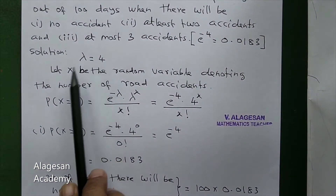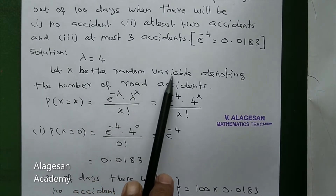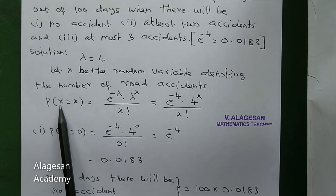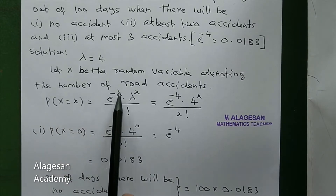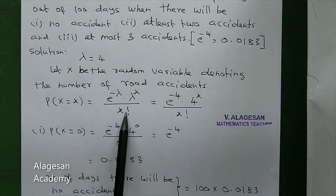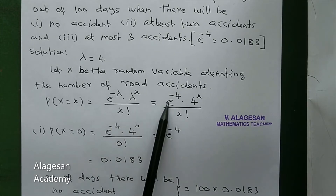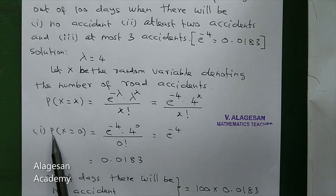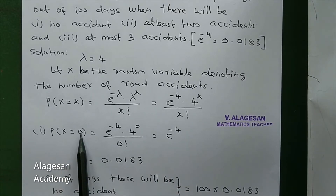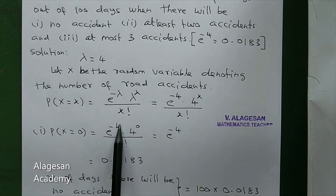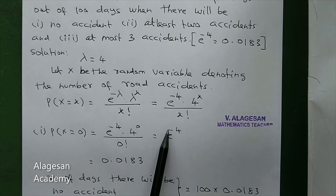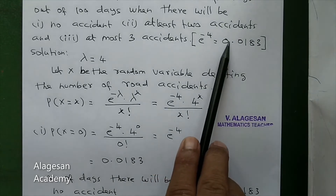Lambda equals 4. Let X be the random variable denoting the number of road accidents per day. P of X equals x is: e to the power minus lambda, times lambda to the power x, divided by x factorial. Since lambda equals 4, this becomes e to the power minus 4, times 4 to the power x, divided by x factorial. First question: P of X equals 0, substituting x equals 0.